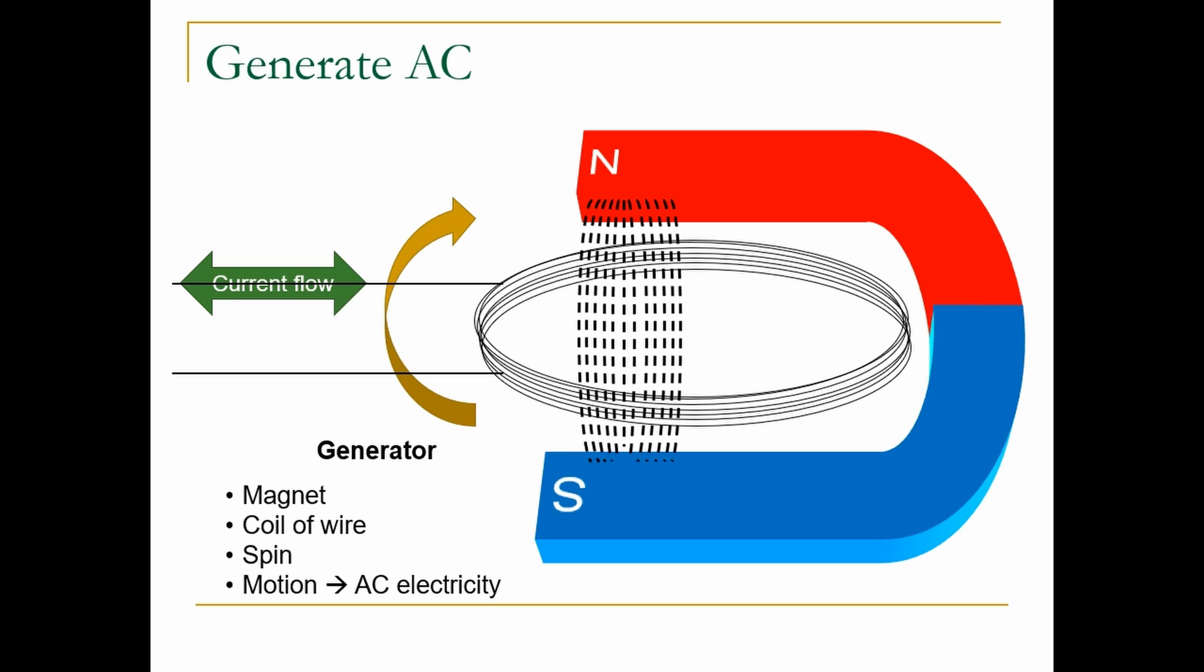As the wire spins, the coil's angle of motion changes relative to the magnetic field, and with it, the voltage in the wire varies.